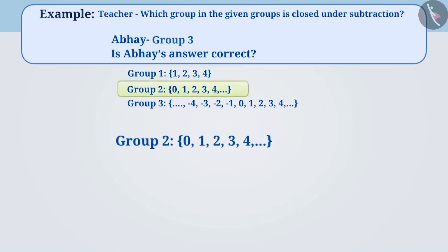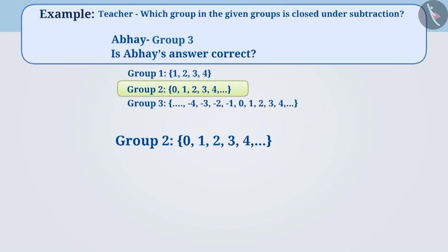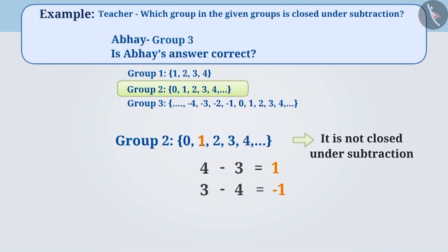Let's talk about group 2. Can you tell me whether group 2 is closed under subtraction? As you can see, one of the numbers of group 2, which is 1, is obtained by subtracting the smaller number from the larger number. But while subtracting the larger number from the smaller number, 1 is not obtained — we instead get minus 1, and minus 1 is not present in this group. For this reason, group 2 is not closed under subtraction.